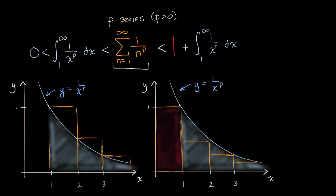What we're going to hopefully see visually is that there's a very close convergence or divergence relationship between this p-series and this integral. When we look at this left-hand graph, we see that this p-series can be viewed as an upper Riemann approximation of that area. Think about the area of this first rectangle: the width is one, and its height is one over one to the p, so this would be the first term in this p-series.